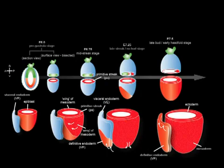The cellular movements underlying the morphogenesis of the definitive endoderm are a little more obscure. We know that definitive endoderm cells emerge in the vicinity of the anterior primitive streak. From there, they intercalate onto the embryo's surface and insert into the pre-existing, overlying visceral endoderm epithelium as they undergo a mesenchymal to epithelial transition.